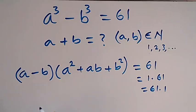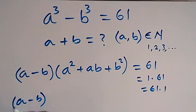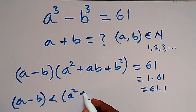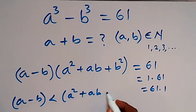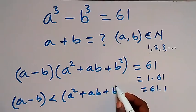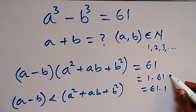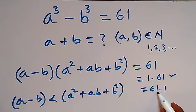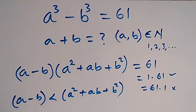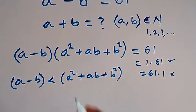But we should note that (a - b) will be less than (a² + ab + b²). That means for the first factoring option, this condition is satisfied — that (a - b) is less than 61. But here 61 is greater than 1, so this confirms the first case is the valid one.